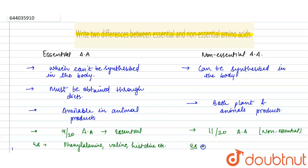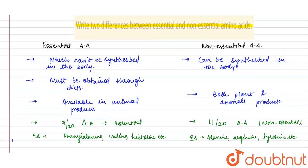Examples of non-essential amino acids are alanine, arginine, tyrosine.